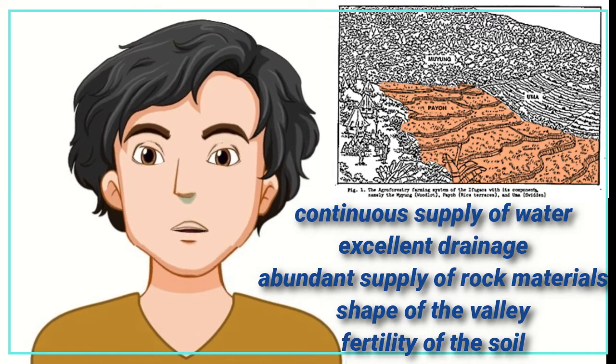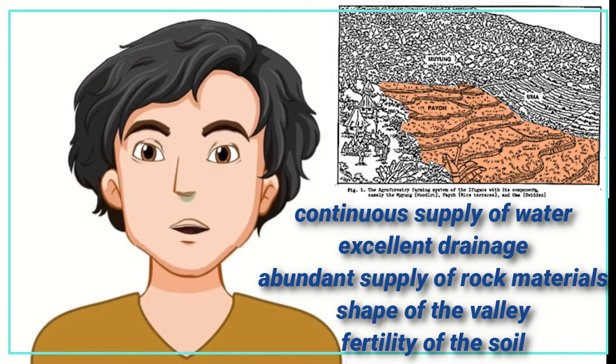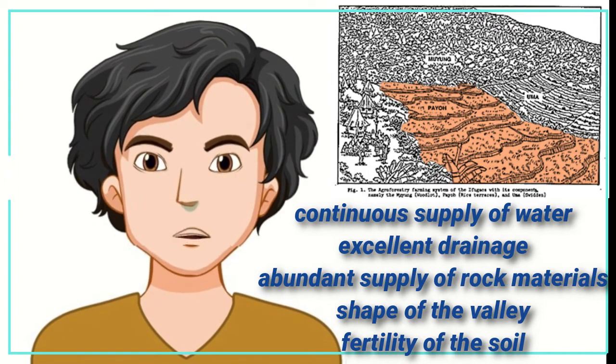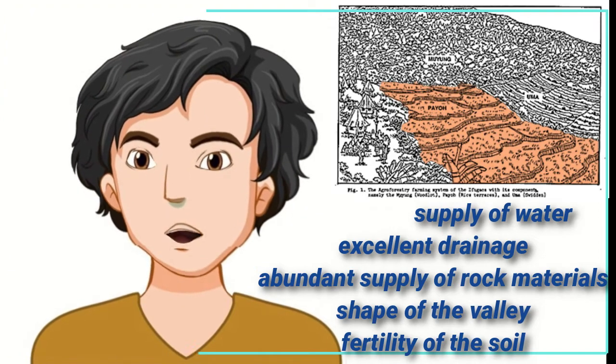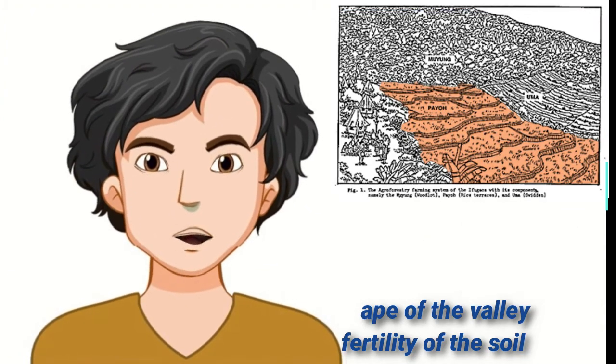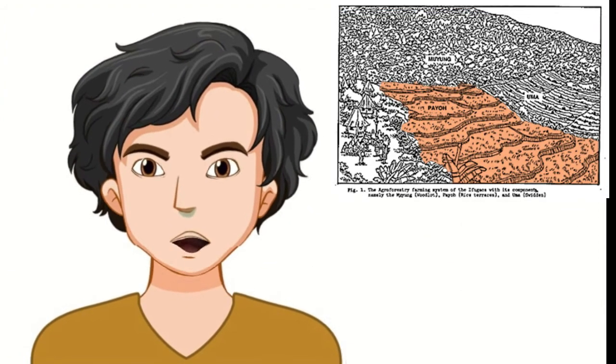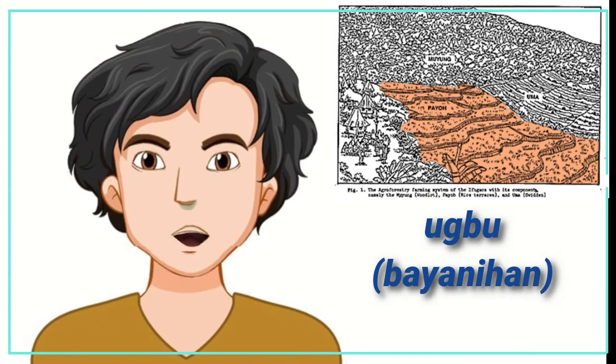There should also be an abundant supply of rock materials for walling. The shape of the valley and the fertility of the soil are also considered. Work on the terraces involves ugbo by Anihan.